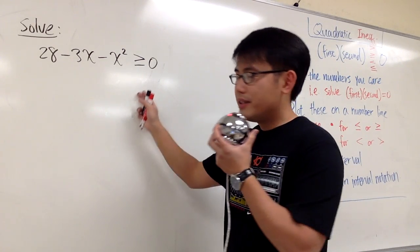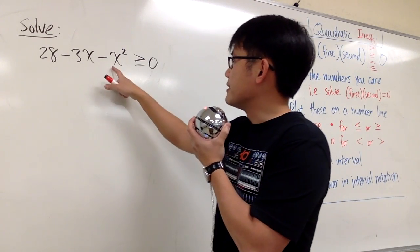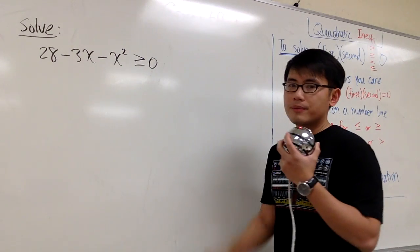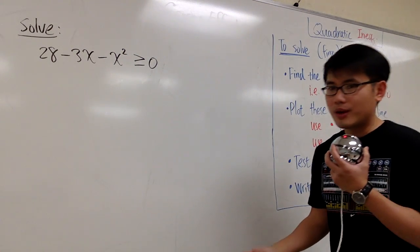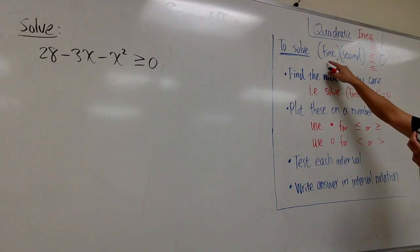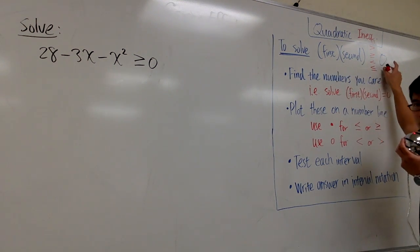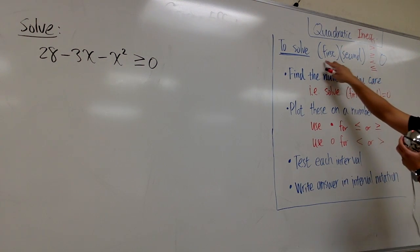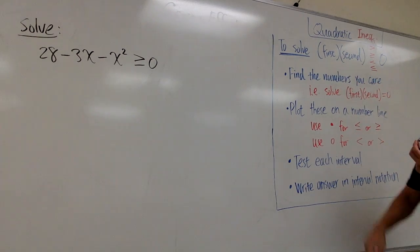Let's see how we can solve this quadratic inequality: 28 minus 3x minus x squared is greater than or equal to 0. To solve quadratic inequality, we are going to follow these steps.